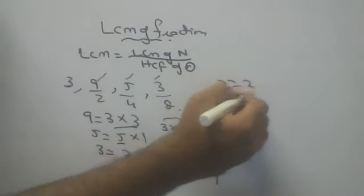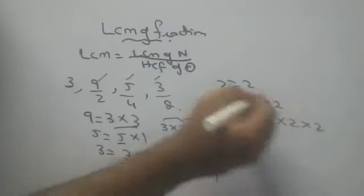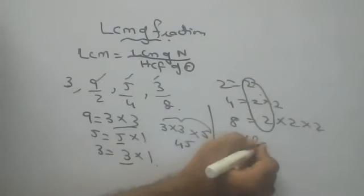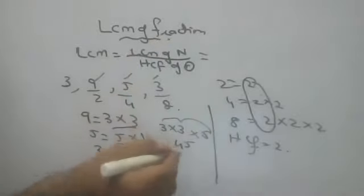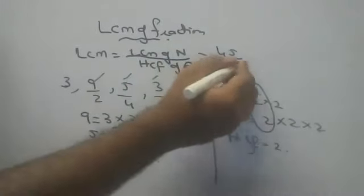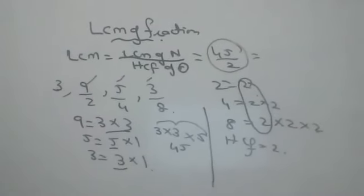HCF of denominators. 4 is 2 into 2. 8 is 2 into 2 into 2. Only 1 two is repeating in all of them. So, HCF is how much? 2. Now, what is the answer? LCM of numerators is 45. What is the HCF of denominators? 2. So, answer is 45 by 2. If you want, you can convert into mixed fraction also because numerator is more.